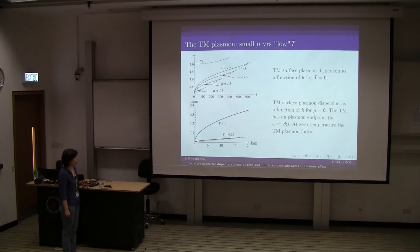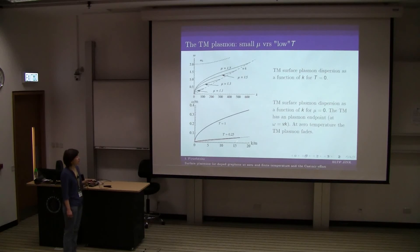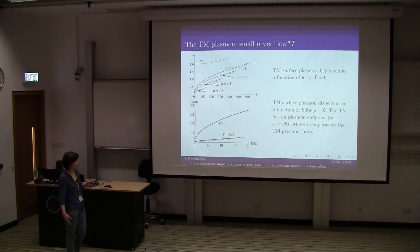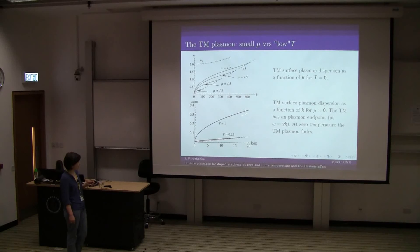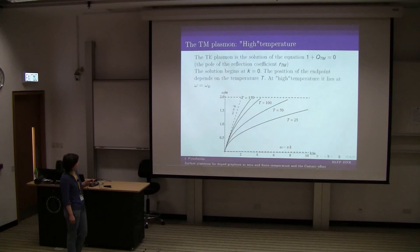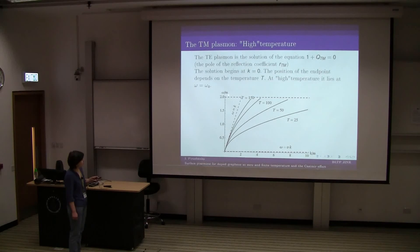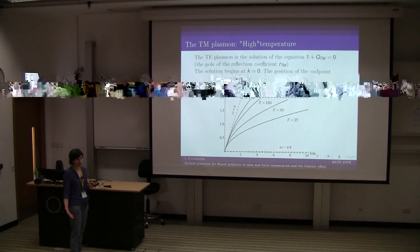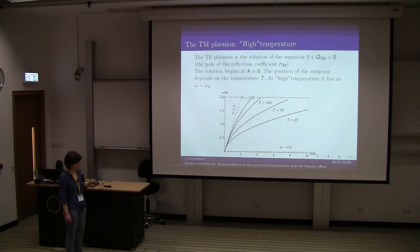Coming to the case of non-zero temperature and zero chemical potential, we again see a starting point and an end point. There is an analytic formula for the end point. The behavior is more or less similar. If we continue increasing the temperature, the plasmon ends up at this threshold of pair creation. Above this threshold, the solution becomes complex and we cannot call it a surface plasmon anymore.